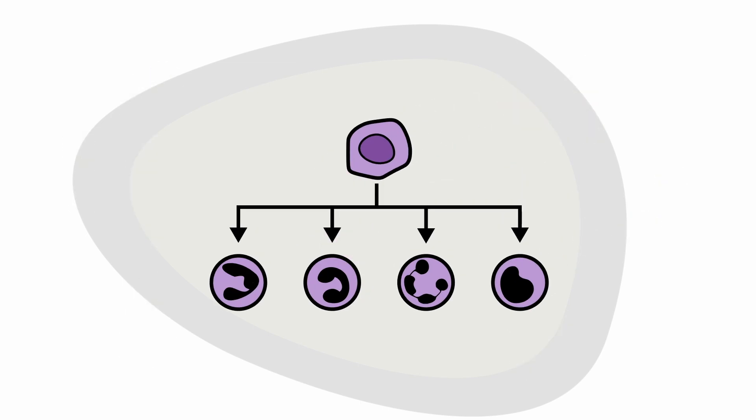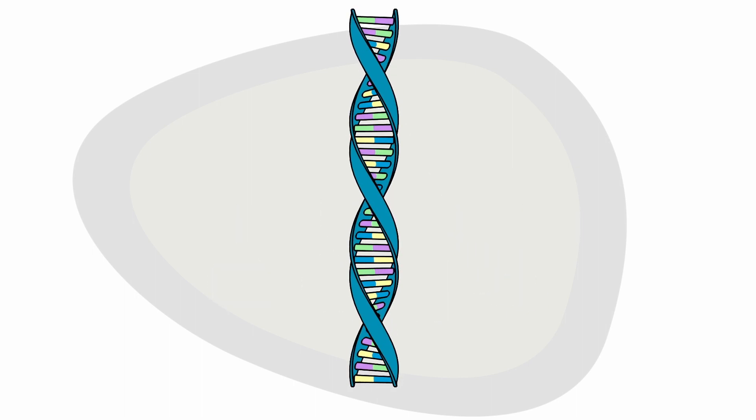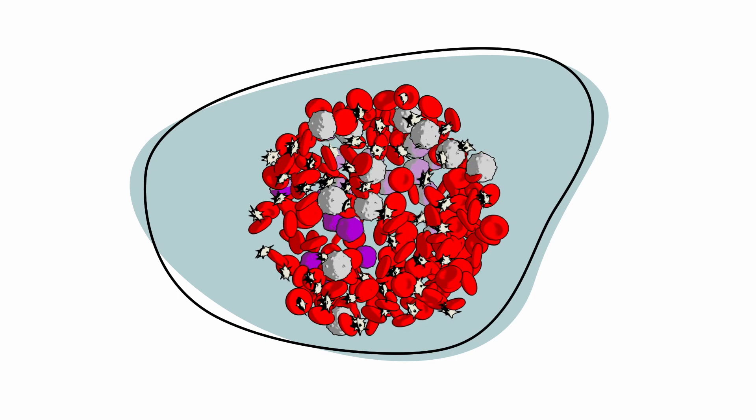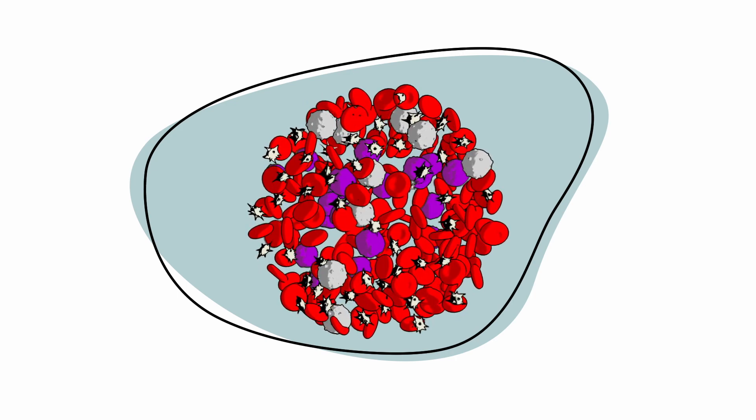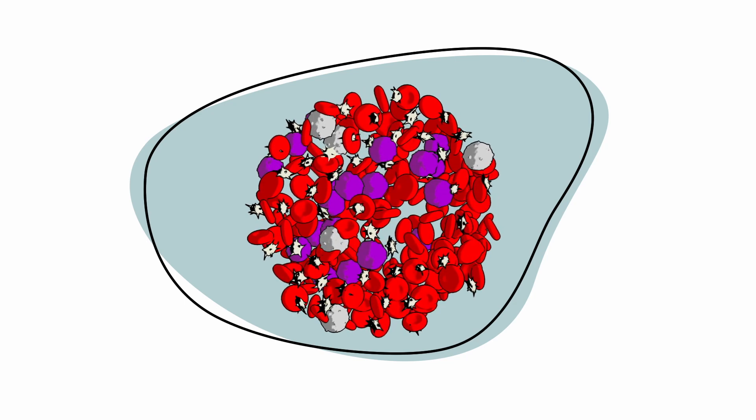With CLL, white blood cells called B lymphocytes undergo changes in their DNA or genetic code. These cells start to multiply quickly, upsetting the growth and normal function of healthy cells. Over time, they can spread to other tissues and organs.